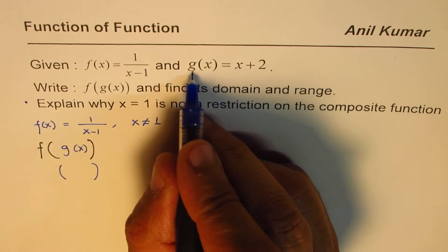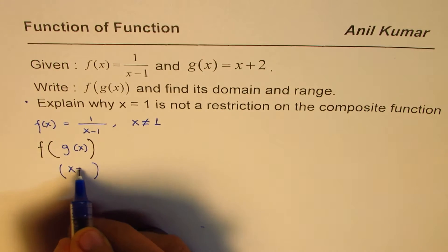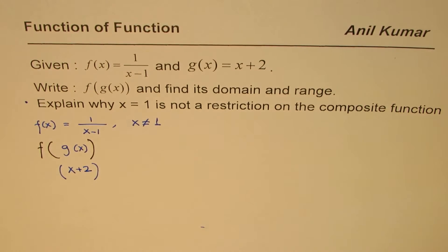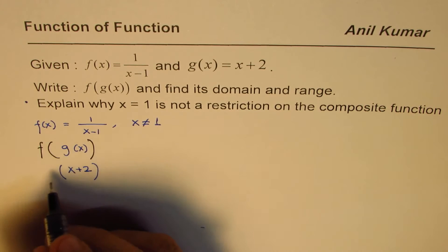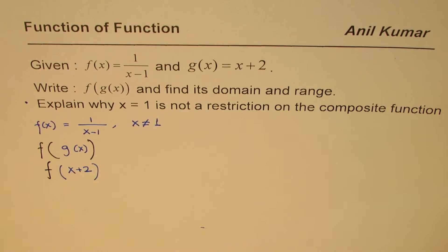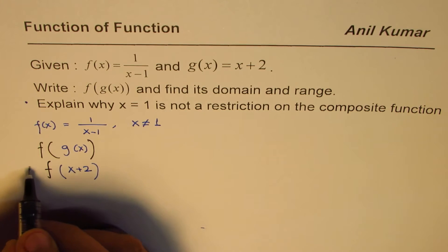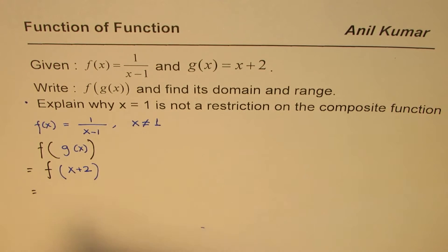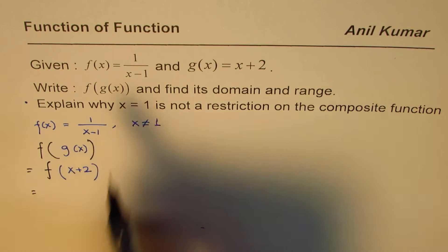So x+2 is what we get as g(x), and we are trying to find f(x+2). Now do you get the idea? This is what we need to find. Using function notation, f(x+2) means in your function f(x), replace x with x+2.